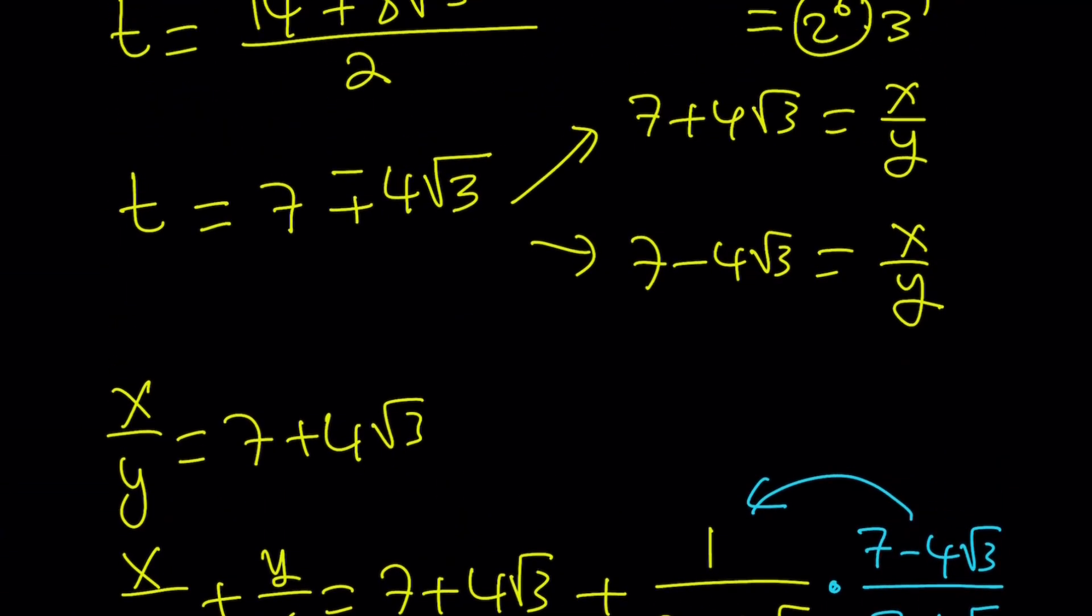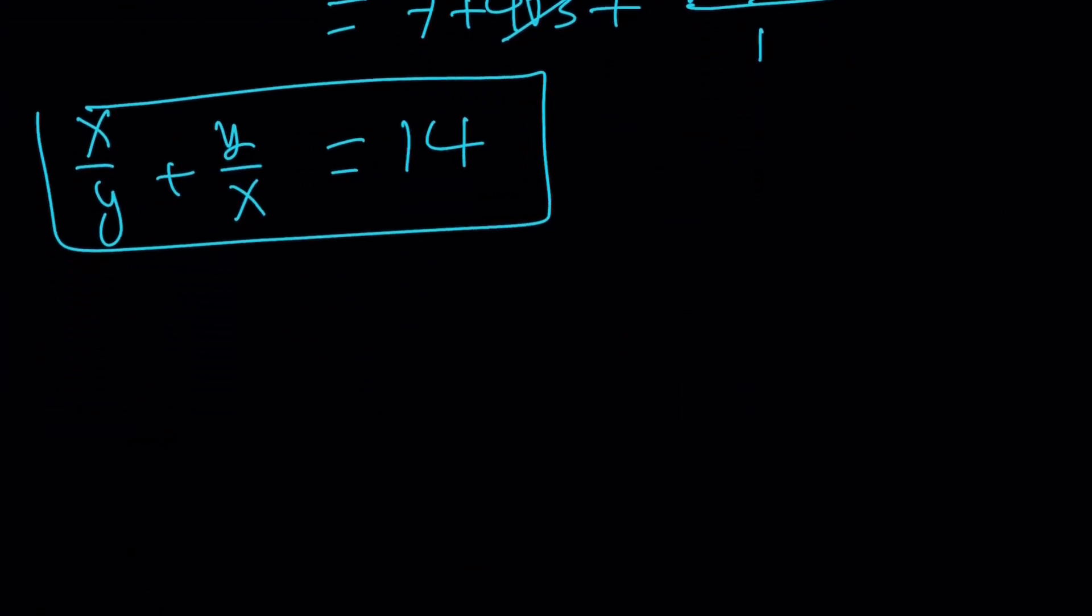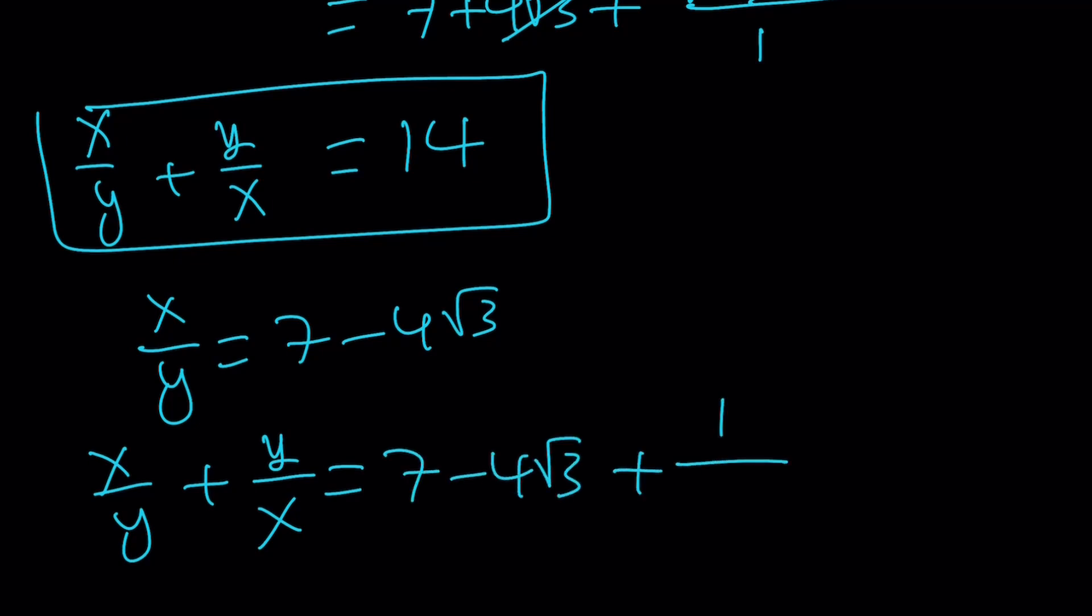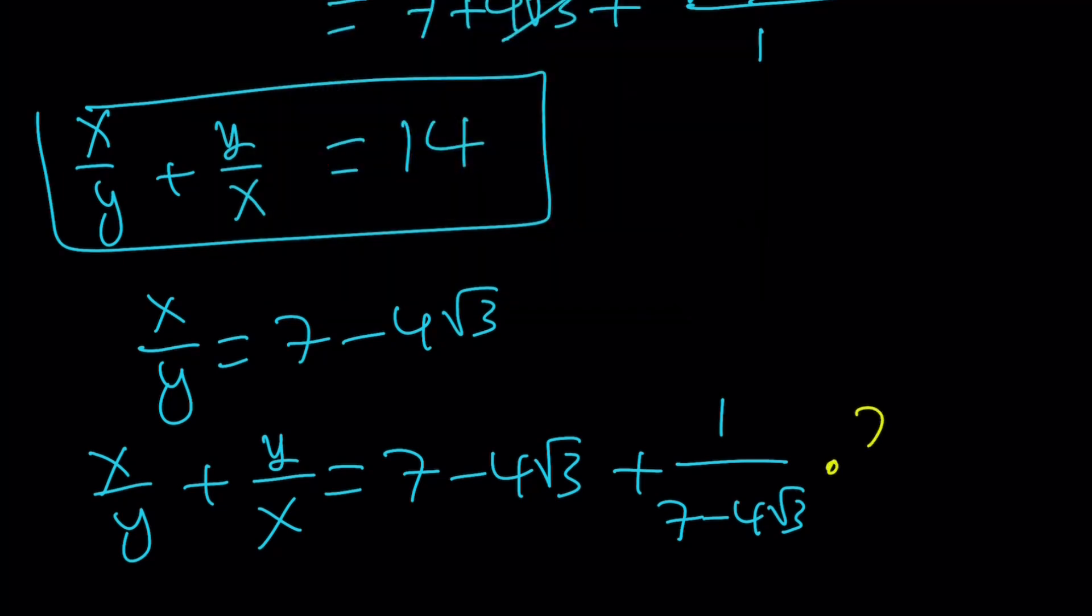That's going to be one of the values. But of course, we have another x over y value, so we have to use that as well. So if x over y is equal to 7 minus 4 root 3, then x over y plus y over x is going to be 7 minus 4 root 3 plus the reciprocal of 7 minus 4 root 3. And we're going to use the conjugates again.